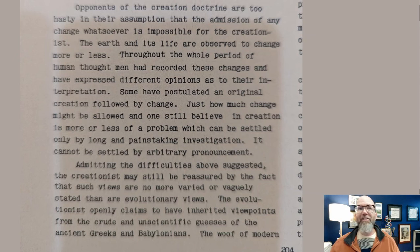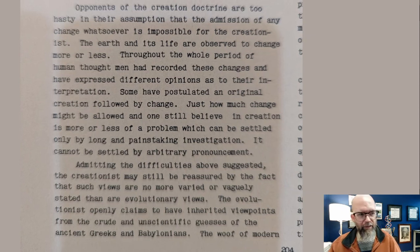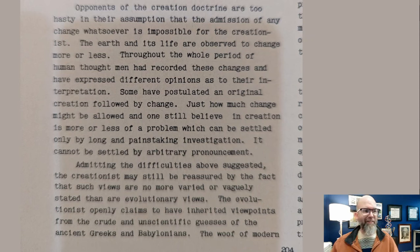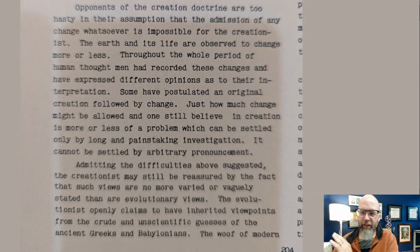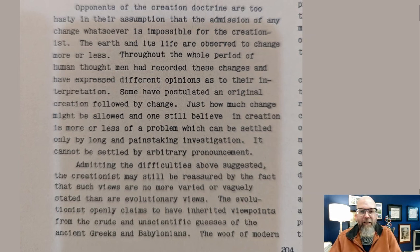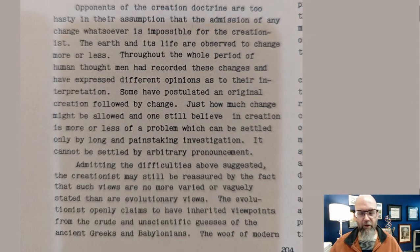That's a common question people ask: what do you mean by a kind? You keep talking about a kind, but how do you define it? How do you measure it? How do you identify it when you see it? Clark writes: 'Admitting the difficulties above suggests that the creationists may still be reassured by the fact that such views are no more varied or vaguely stated than evolutionary views.' He's just done four or five pages on how hand-wavy evolutionary theory was in 1946. And he's saying: they have their problems too. Sure, we don't understand what a kind is, we can't define what a kind is, but we're no worse off than the evolutionary biologists. Let's do a bunch of painstaking investigation and maybe we'll end up with a more robust explanation.